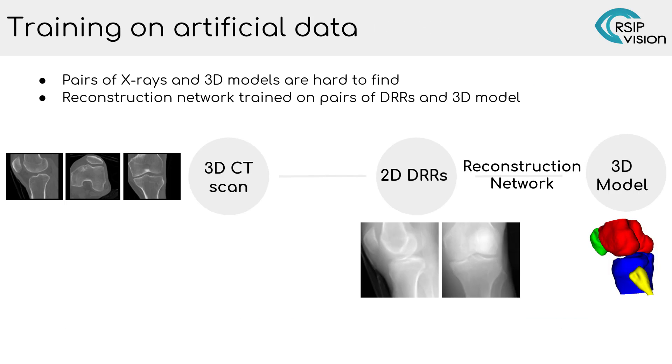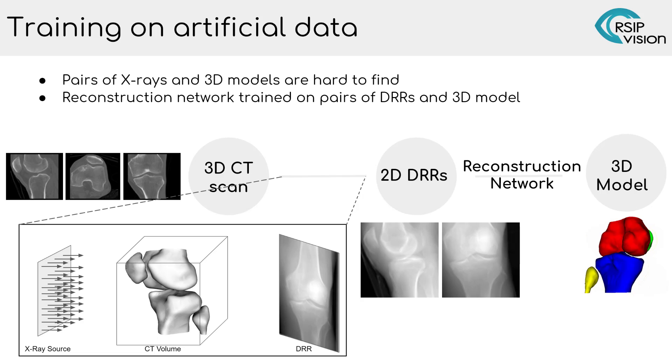While CT scans with ground truth 3D segmentation are available, paired X-ray images with associated ground truth 3D reconstructions are very rare. For this reason, we use annotated CT scans to create synthetic X-ray images by rendering DRRs. This way, each pair of synthetic X-ray images is associated with an aligned ground truth reconstruction.